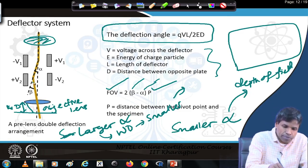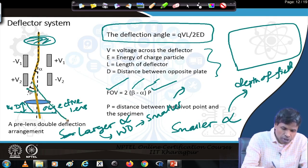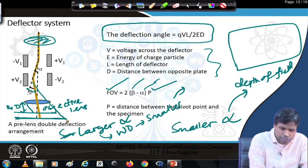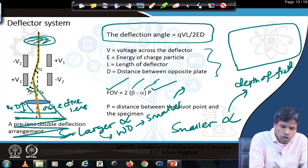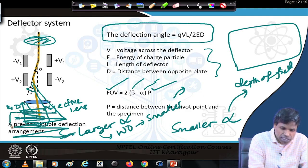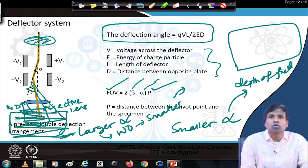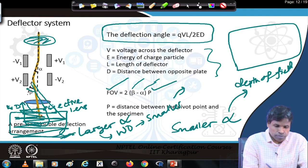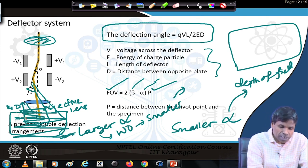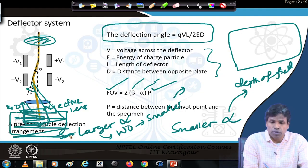So depending on requirements, the deflector system can be placed before or after the objective lens. By choosing the deflection angles alpha and beta, we can scan over a larger area or a smaller area. If we are scanning over a smaller area, magnification will be higher; if we are scanning over a larger area, magnification will be smaller.